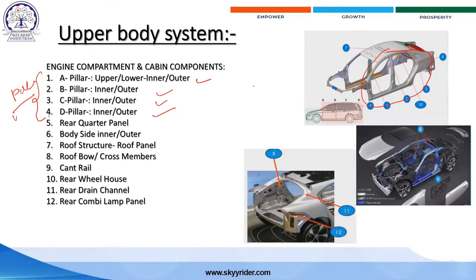Side impact is generally caused by another vehicle or a loader approaching from the side. When the vehicle is hit on the side, these pillars protect the driver and passengers. A pillar, B pillar, and C pillar are located at corresponding positions along the side of the vehicle. This is demonstrated on a MPV vehicle which has four pillars.